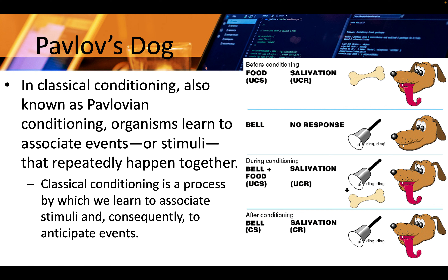Pavlov was a gastroenterologist studying stomach juices. What he proved was that dogs will salivate when given food, but then he started ringing a bell when he fed the dogs. Pretty soon, the dogs would salivate when he rang the bell, whether the food was there or not. That's how he conditioned the dog to respond to the bell.